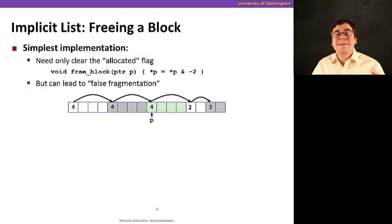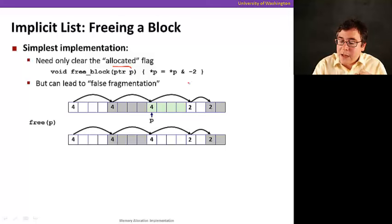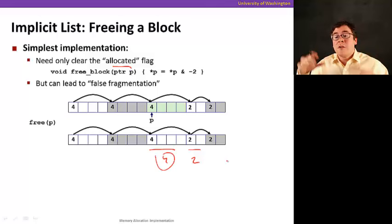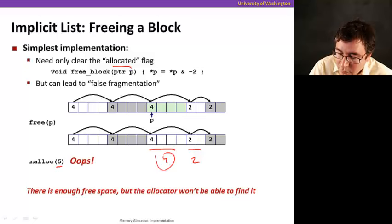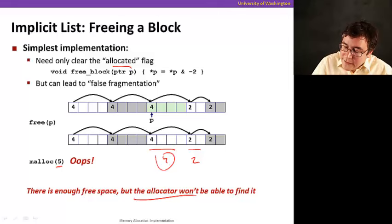So now how do we free a block? Well, the simplest way is to just clear the allocated flag. So we can do this, we just clear the bits by masking it out. But this is bad because it can lead to false fragmentation. So now I have a free block of four here and a free block of two here. Why not just make it look like a block of six? Because if we don't, later if I do need a block of size six, I'm not going to be able to honor it because I'm going to think I don't have one enough. But this is not real fragmentation, but it looks like real fragmentation. So that's a big oops. What's the problem? Now I want to allocate five, then I can't honor it.